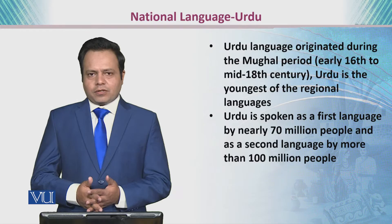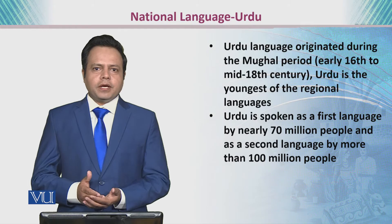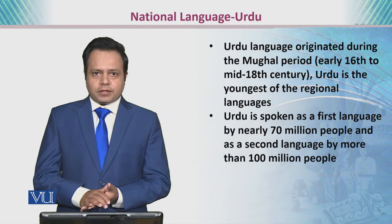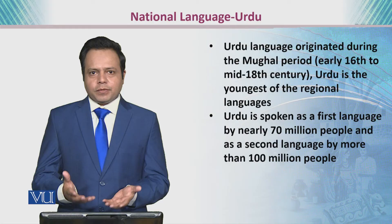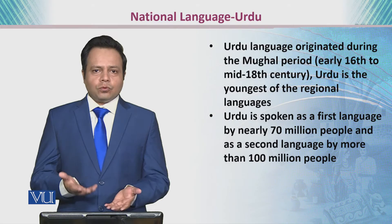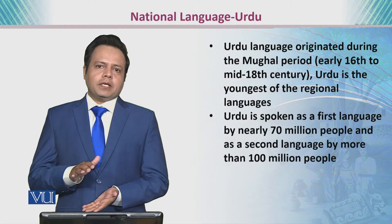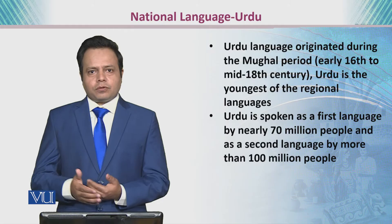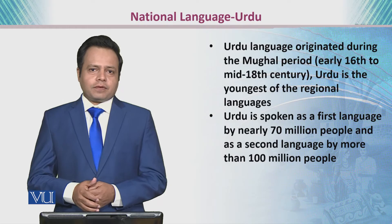It is considered one of the youngest languages of the region, because it came into being when people from different regions worked together, and through the amalgamation of vocabulary from different languages, Urdu came into being. Urdu is spoken as a first language by nearly 70 million people around the world, whereas as a second language, we can estimate roughly around 100 million people around the world.